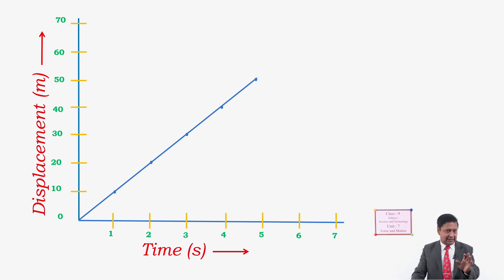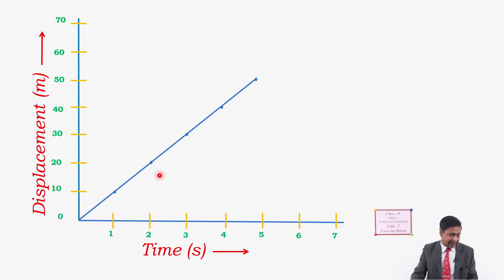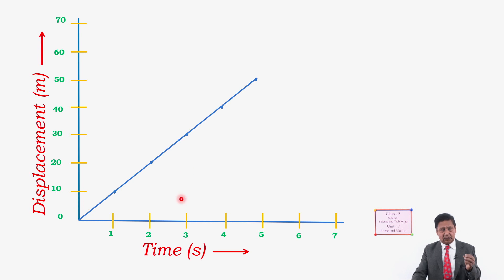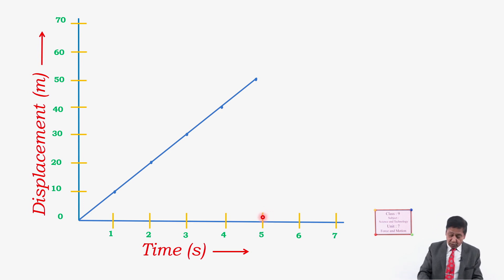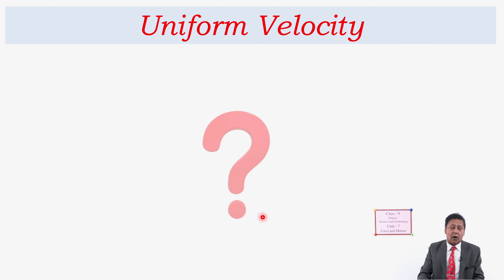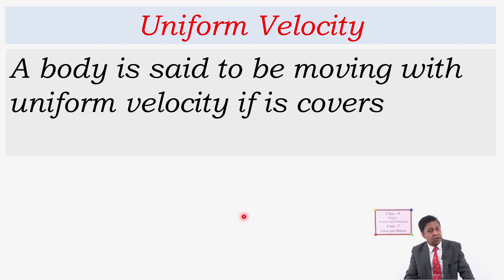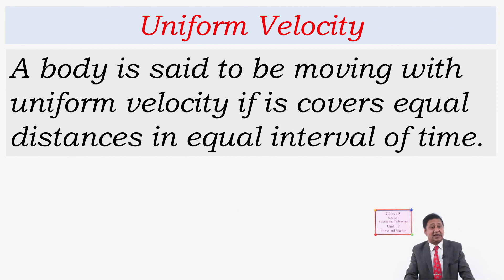The body covers 10 meters in the first second, 10 meters in the second second, and 10 meters in the third second. This means the body covers equal distance in equal intervals of time, so the body is moving with uniform velocity. A body is said to be moving with uniform velocity if it covers equal distances in equal intervals of time.